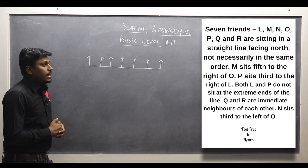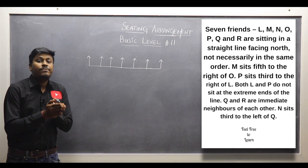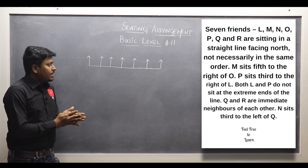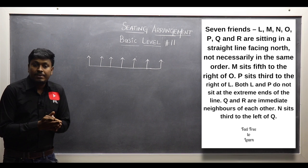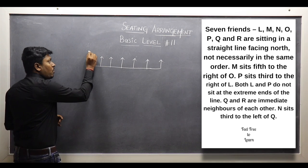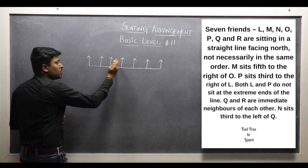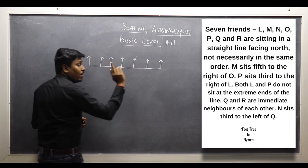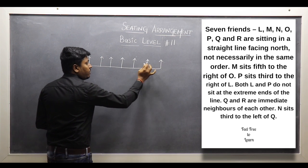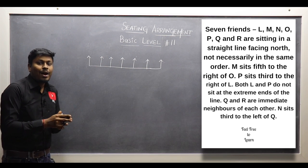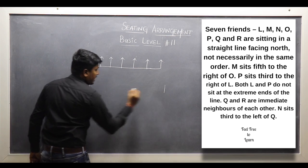Let me move on to the first point: M sits 5th to the right of O. So O's right hand side at the 5th place is M. Let me go with the possible diagrams. We know that O's right hand side at the 5th place is where M is sitting. If I fix O at position 1, then counting 1, 2, 3, 4, 5, I can place M there — that's one possible. We have only 2 possible arrangements. I am going to draw another possible diagram.